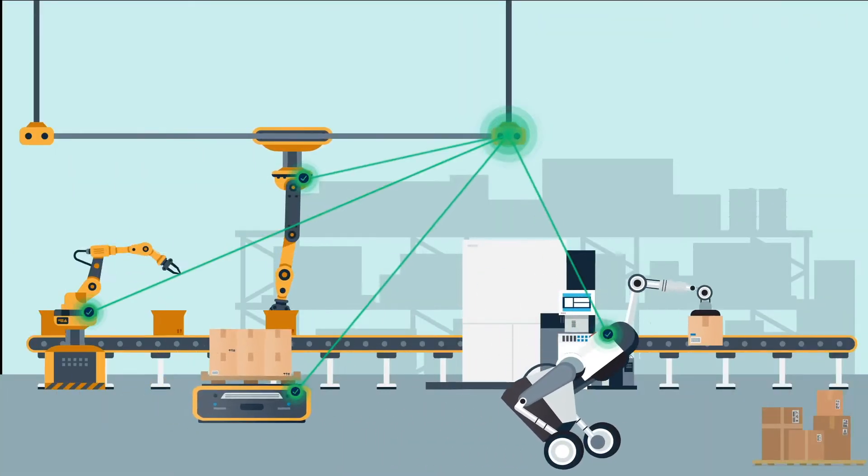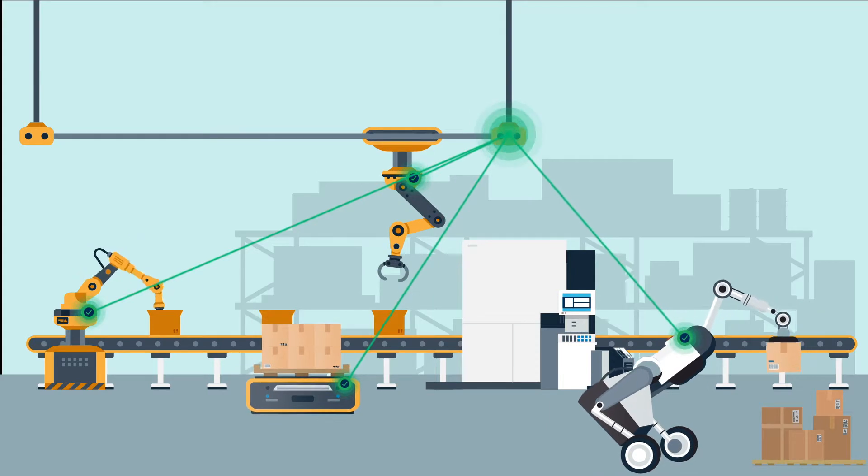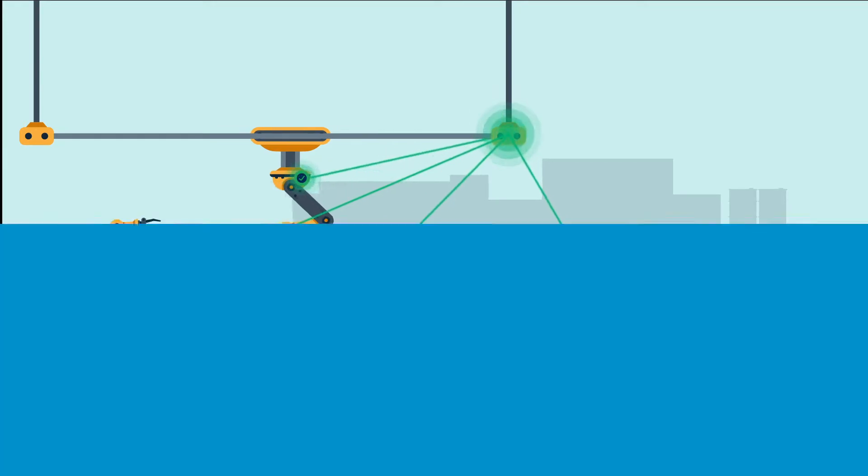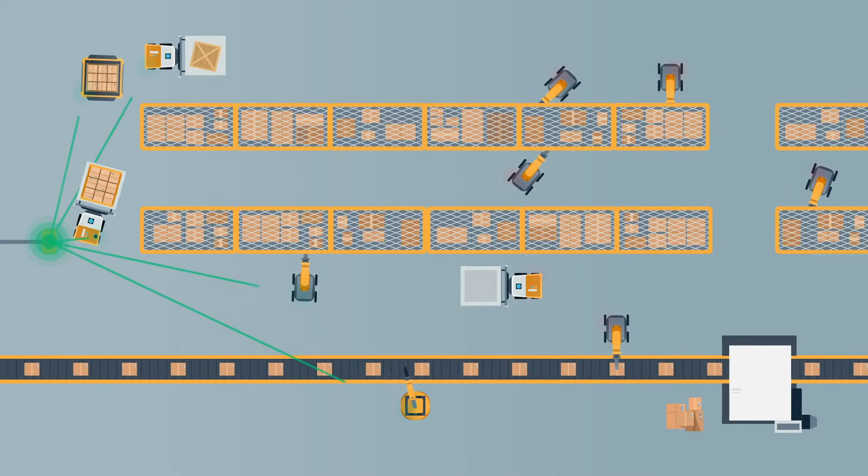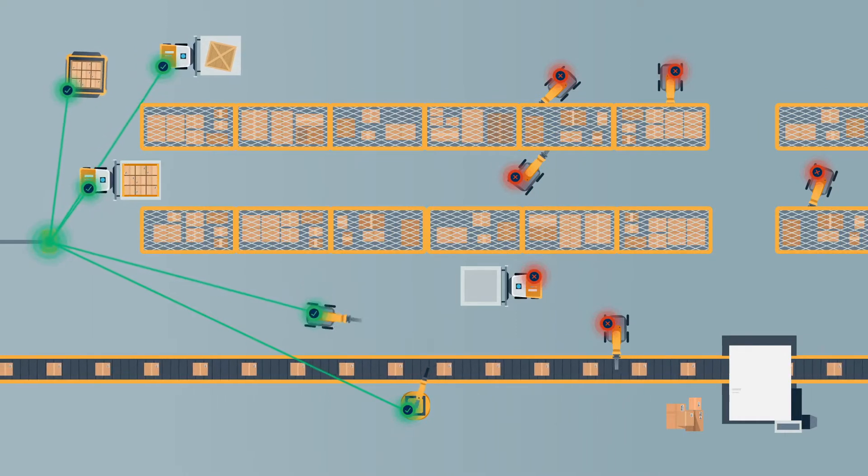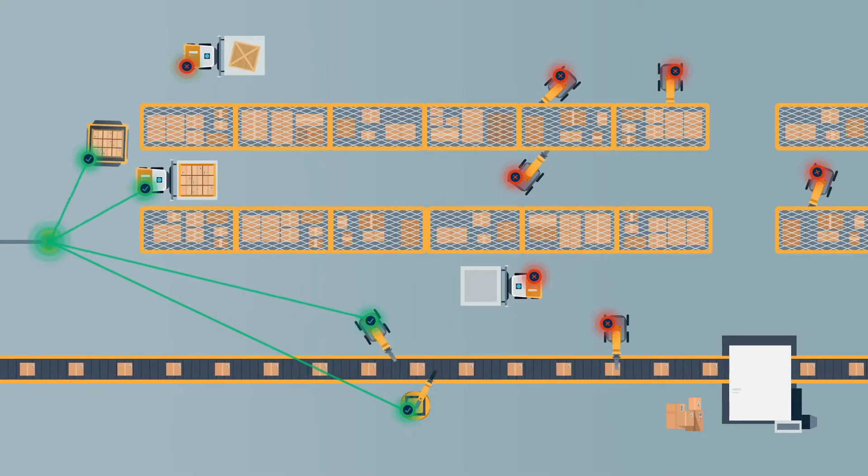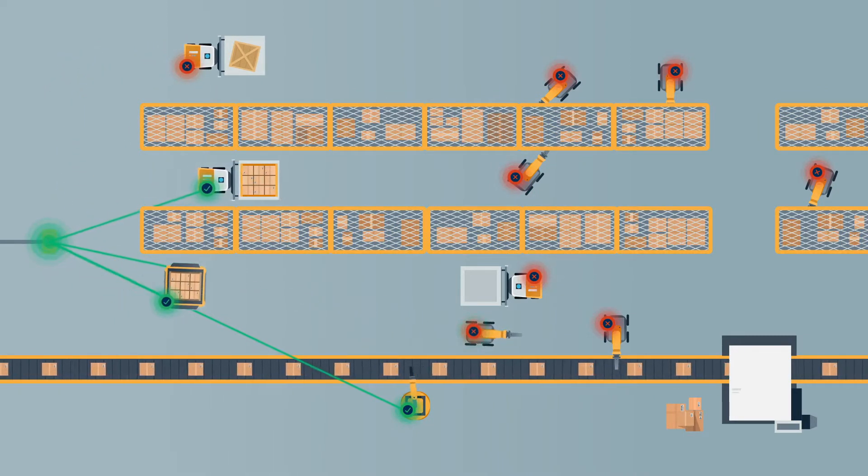Traditional Wi-Fi networks used in warehouses rely on fixed infrastructure, so they can't maintain connectivity with automated and autonomous systems as they move around obstacles common on the warehouse floor, like metal racks and heavy equipment.